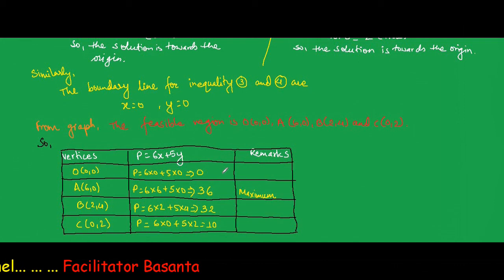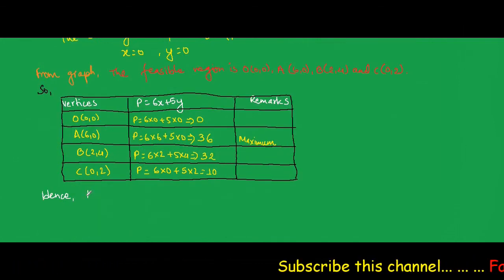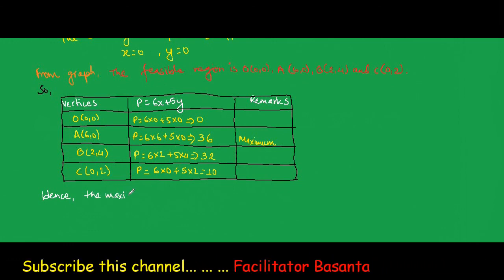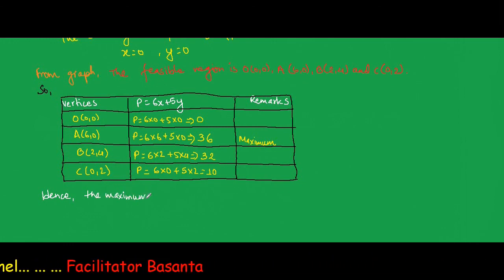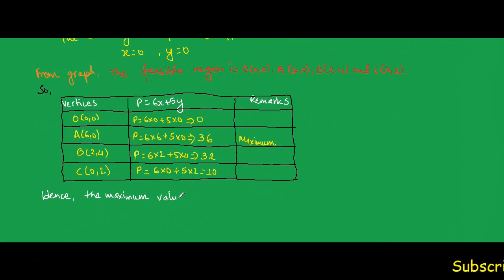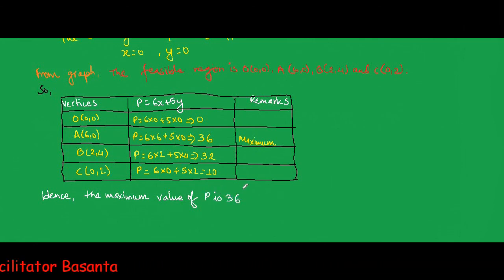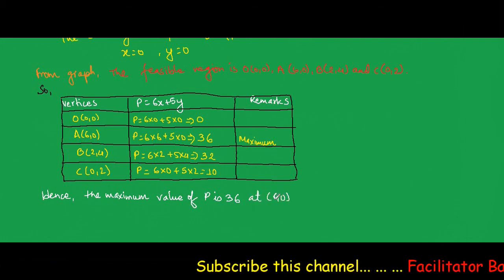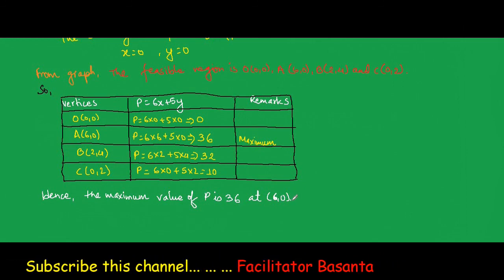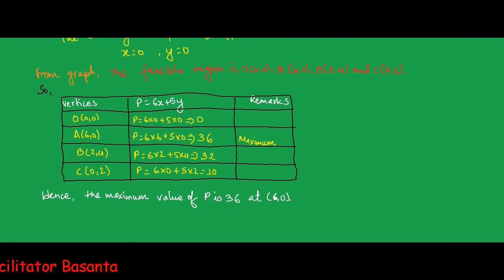If you are finding the minimum, the least value would be the minimum. The maximum value of P is 36, at the point (6, 0). In this way, we can maximize the given objective function under the given constraints.